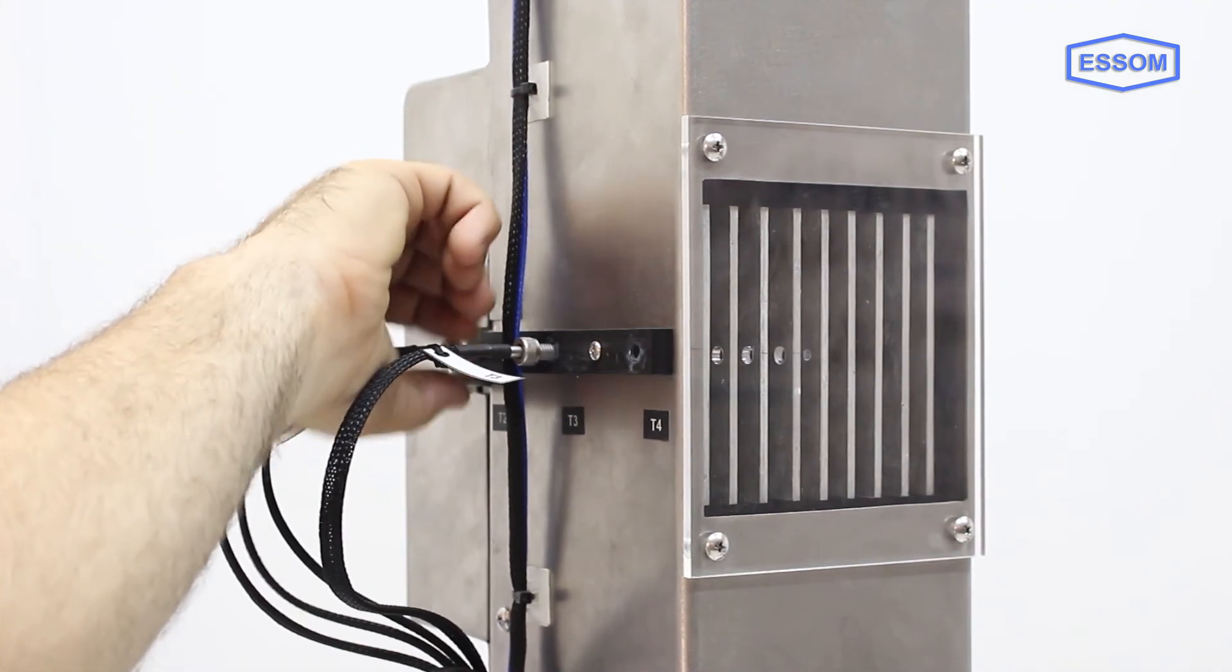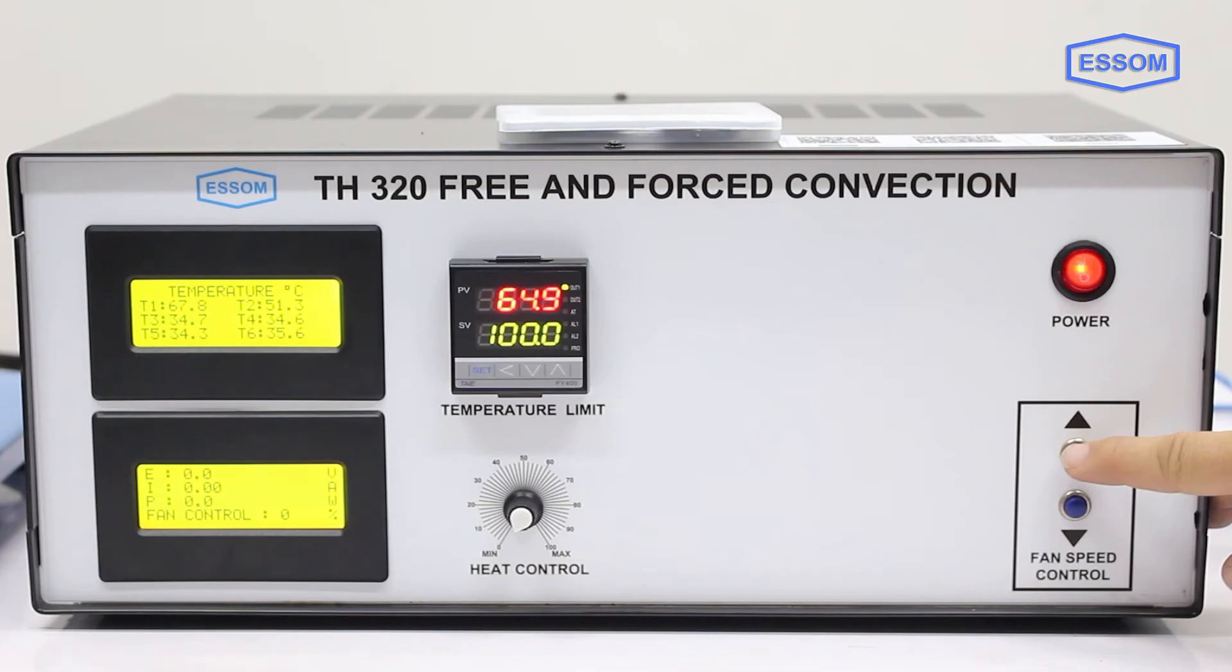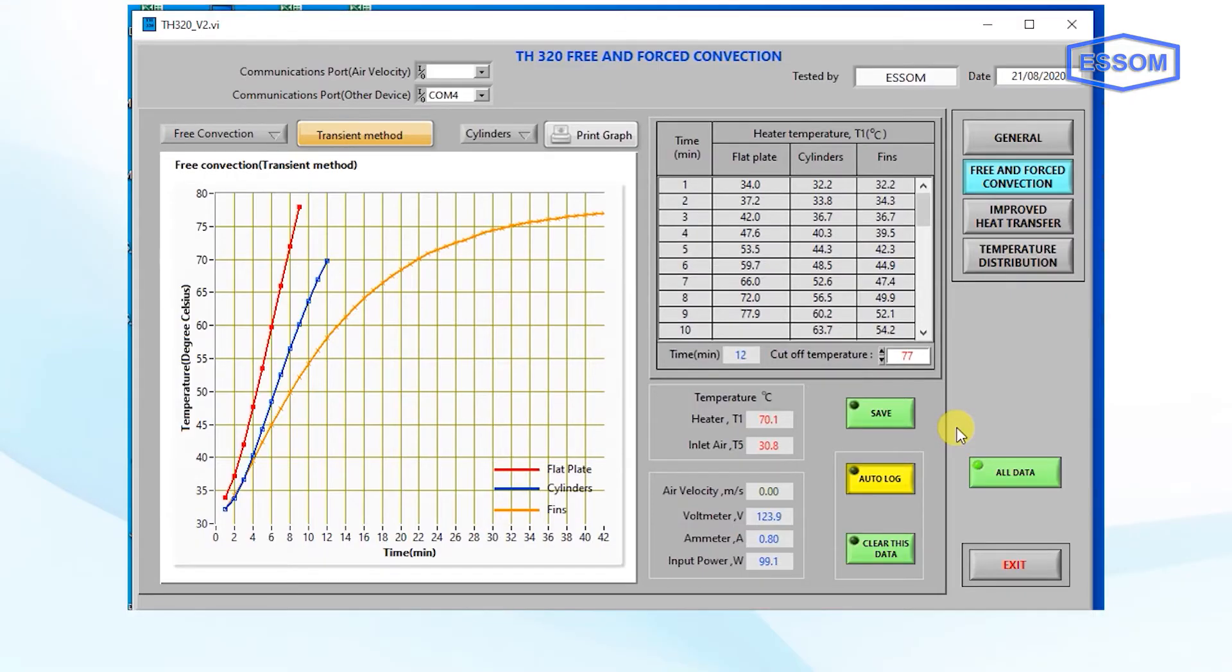Temperatures of hot surface and of air at different points in the duct are measured by thermocouples. A service module provides power supply, heater control unit, and measuring instruments.